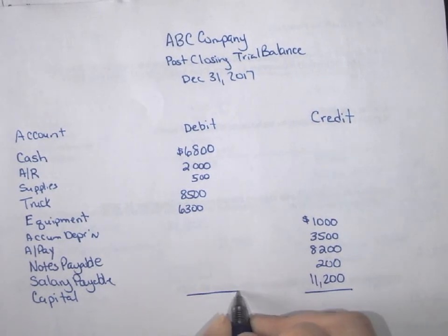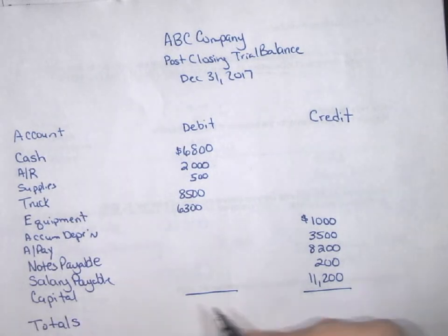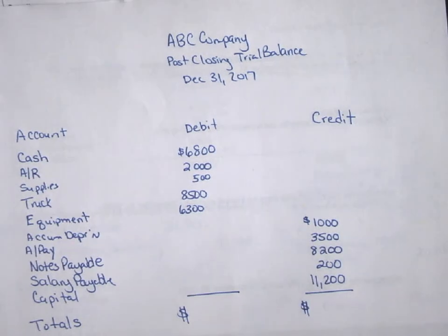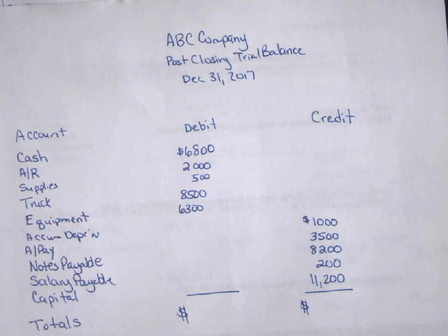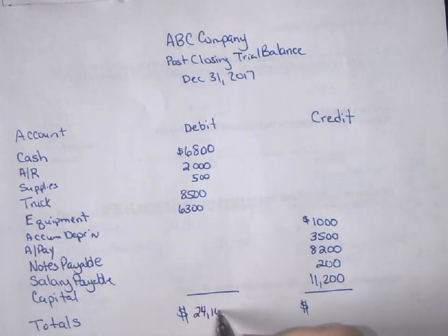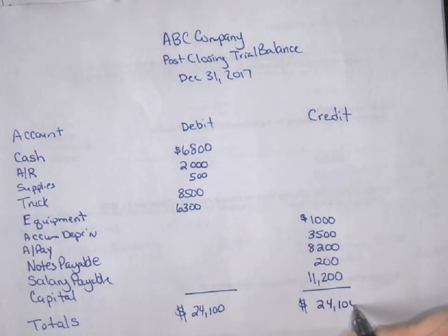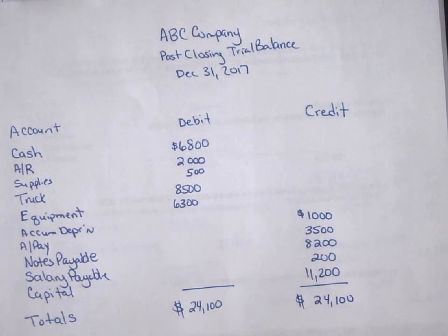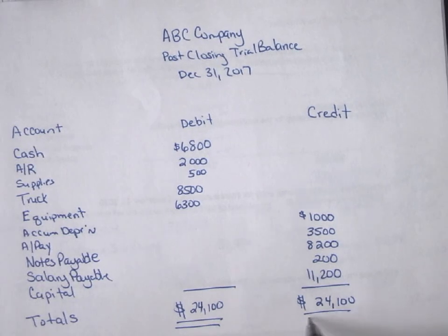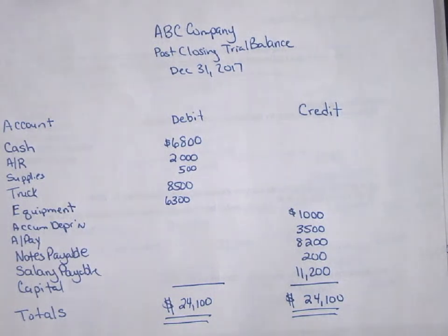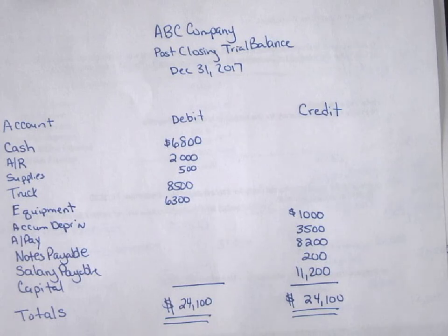Now we can look at our totals and check whether debits and credits balance. The debit column totals $24,100 and the credit column also totals $24,100, so we are in balance. Remember to finish with a dollar sign and a double underline. That is what we look at for our closing entries and post-closing trial balance — it will only contain permanent accounts because everything else closed to zero.